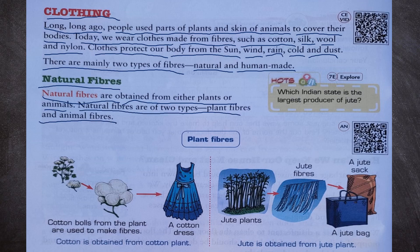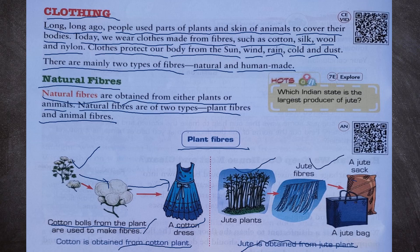Plant fibers: cotton balls from the plant are used to make fibers. Cotton is obtained from the cotton plant, and a cotton dress is made from it. Jute is obtained from the jute plant — we can see jute plants, jute sacks, and jute bags made from jute fibers. West Bengal is the largest producer of jute in India.